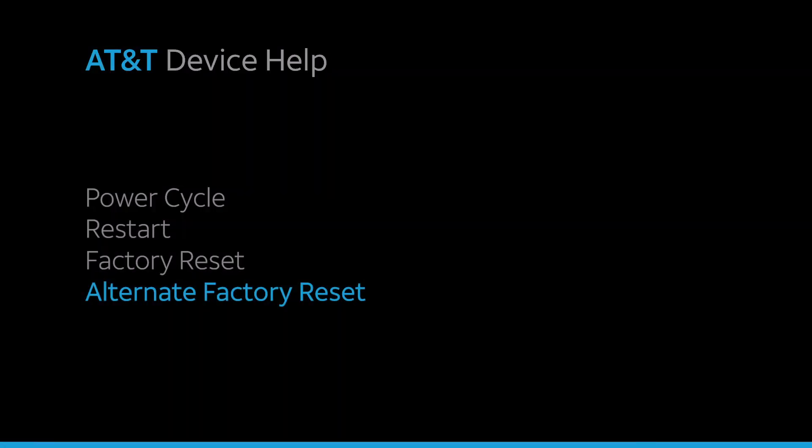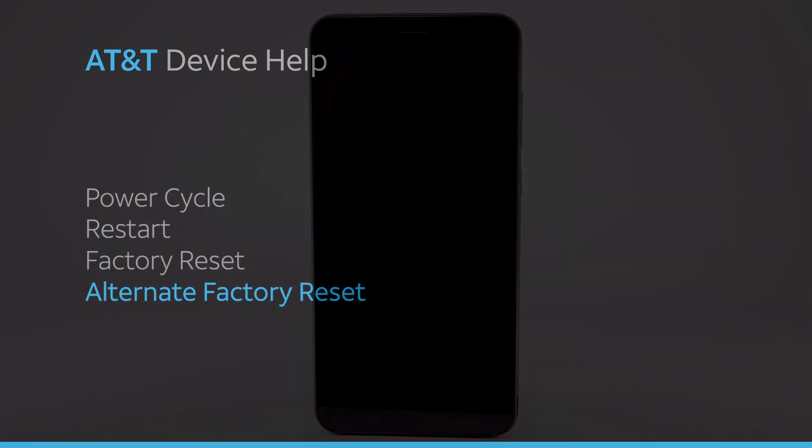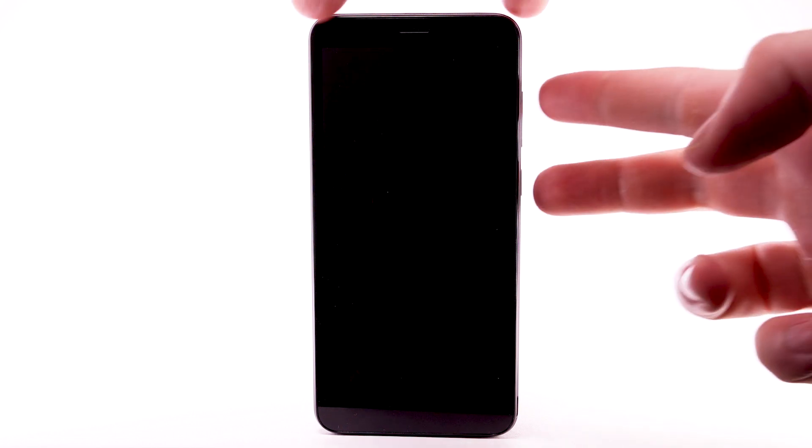Alternate factory reset. If unable to perform the standard master reset using the previous steps, try the alternate method by first powering the device off. With your device powered off, press and hold the Power Lock and Volume Up buttons until the screen lights up.